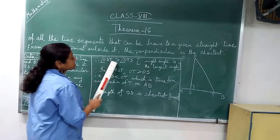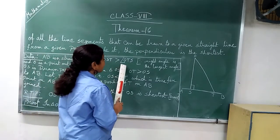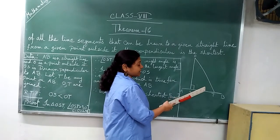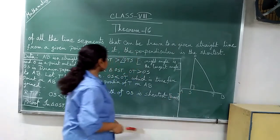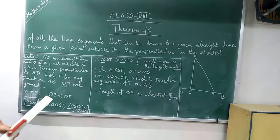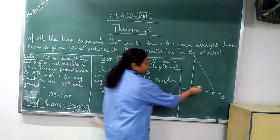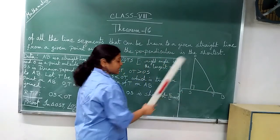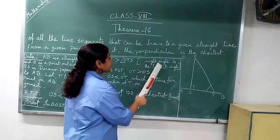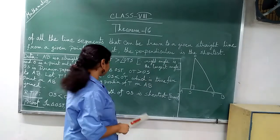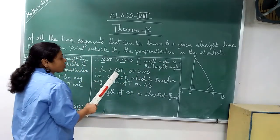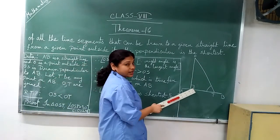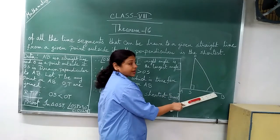That means this angle is less than this angle. Therefore angle OST, this angle is greater than this angle. Since right angle is the largest angle, therefore in triangle OST, OT greater than OS. This angle is greater, so this side is also greater.